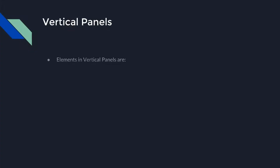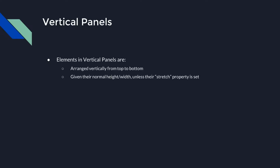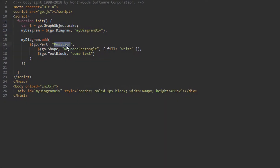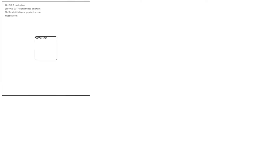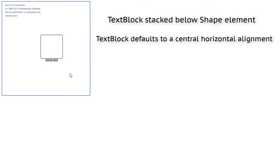Let's examine the Vertical panel. It arranges its elements vertically from top to bottom. Each element keeps its normal height and width unless its stretch property has been set, in which case it will be given the width of the panel. If an element's width is not the same as the width of the panel, it is horizontally aligned according to its alignment property. Let's use our template and make a Vertical panel, and set the background of the TextBlock to light gray so we can see its dimensions. The TextBlock is stacked below the Shape, and since we did not assign an alignment to the TextBlock, it defaults to go.Spot.Default, which lets the panel determine alignment — in this case, central horizontal alignment.